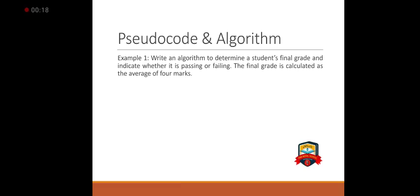Write an algorithm to determine a student's final grade and indicate whether it is passing or failing. I have to write a program in programming language, but before writing in programming language, I must write it in algorithm form. The final grade is calculated as the average of 4 marks.